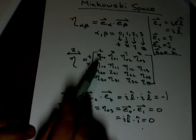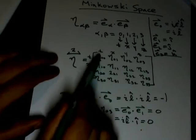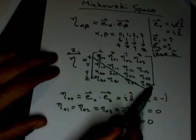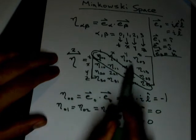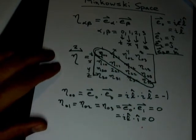And likewise, only the diagonal terms right here are going to survive. And the rest are all going to be 0 because they're all orthogonal.